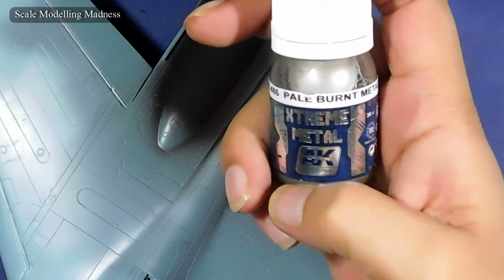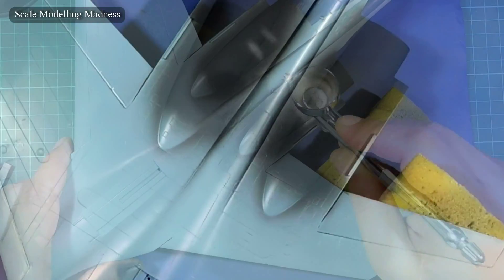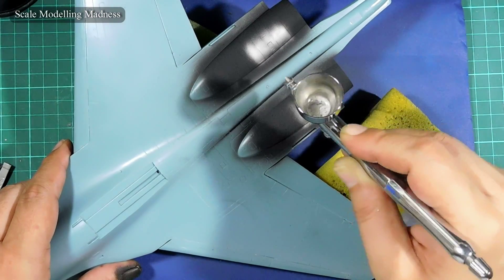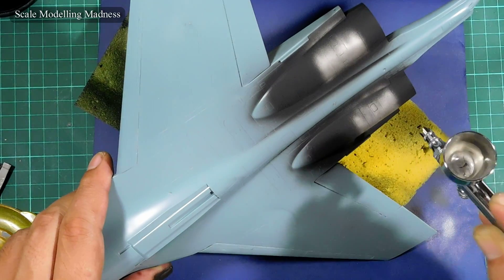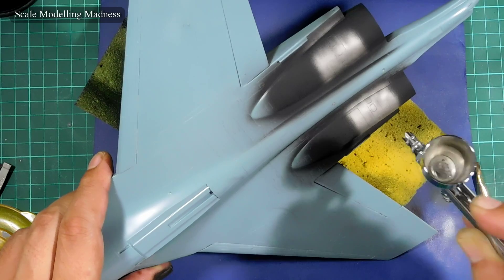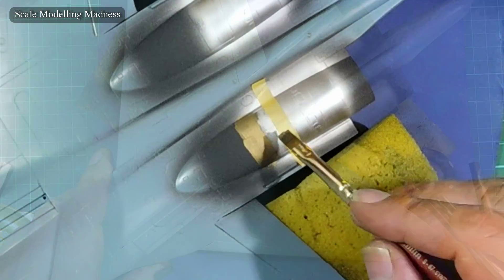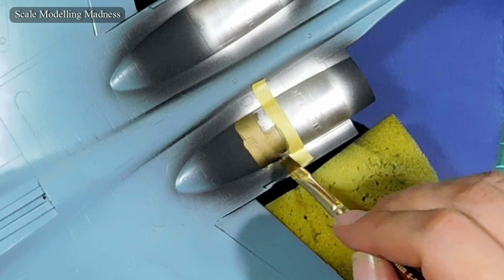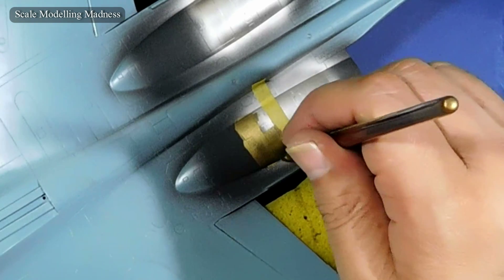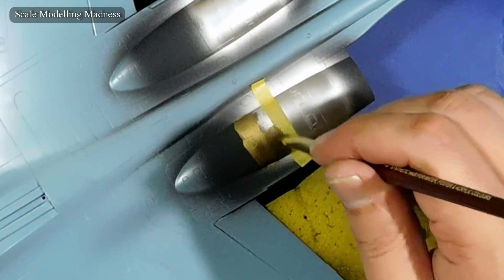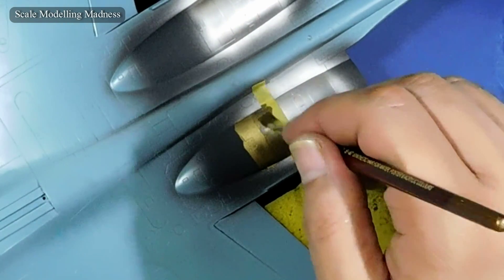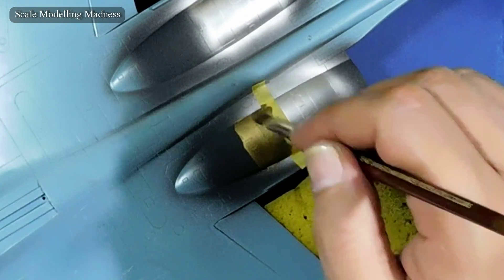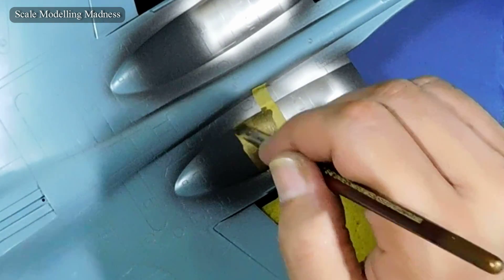I used some pale burnt metal to paint some panels. Next, I painted random panels with brass. The idea is to use these paints, especially the brass, as an undercoat for the final burnt metal finish. Hopefully, this base layer will add tonality to the final finish.